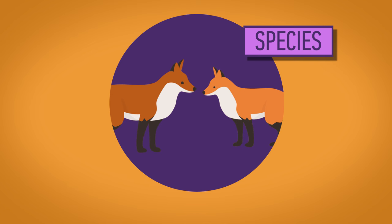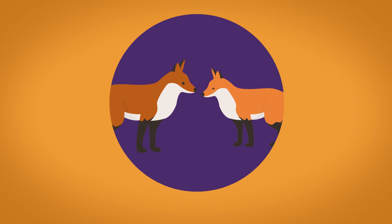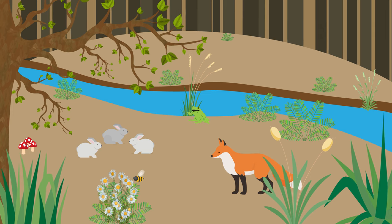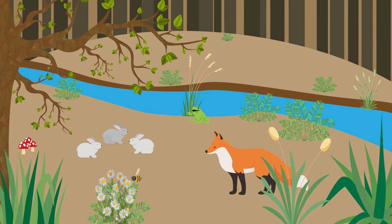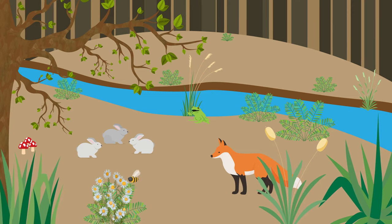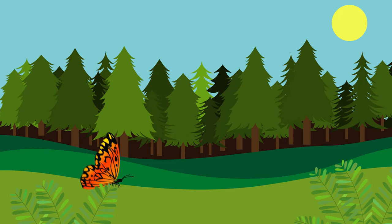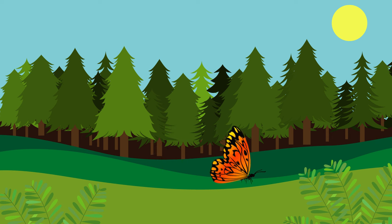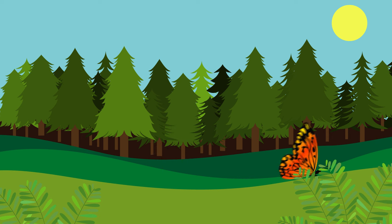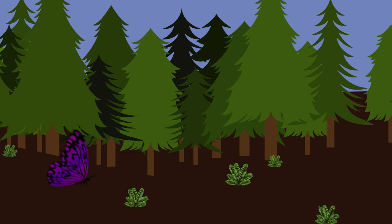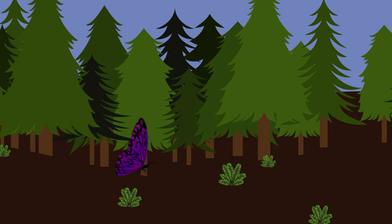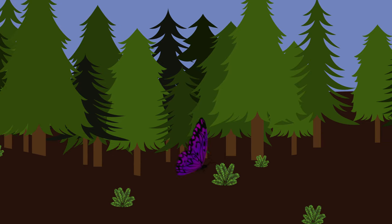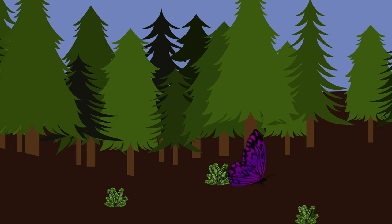A species is a group of potentially interbreeding individuals, which do not normally reproduce with other species to produce viable fertile offspring. So here in our woodland we have foxes and rabbits that are clearly different species. But we may also have a few different species of butterfly - maybe one lives on the outside of the woods and likes light, while another lives deeper in the wood. And because they prefer different areas of the wood, they don't interbreed.